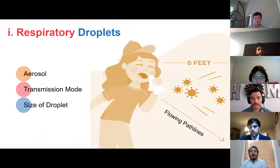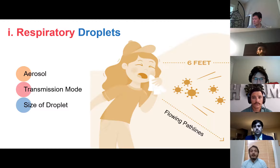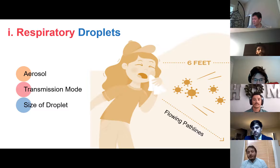Under background information, different research and projects have already been published. Respiratory droplets play an important part in the transmission of COVID-19. When respiratory droplets stay in the air for hours, they become aerosol, which contributes to virus transmission. The transmission mode is basically the air, which follows a path line from the infected person to others. The size of droplets can vary from person to person. For the project, we chose the average of small and big droplets, which is 5.2 micrometers.